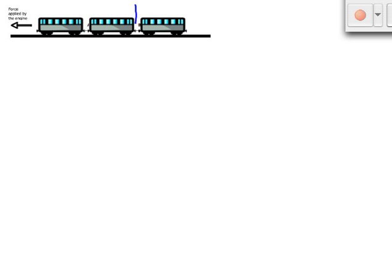In the second part of the problem, we want to calculate the tension in link B. Now this link is pulling the last carriage of the train, so it's pulling a mass of 8,000 kilograms.